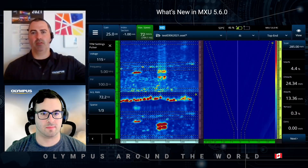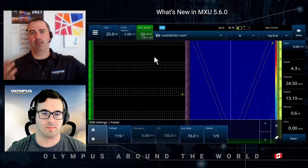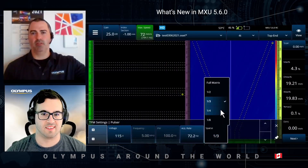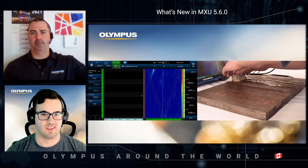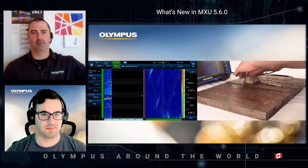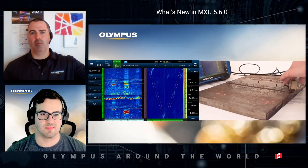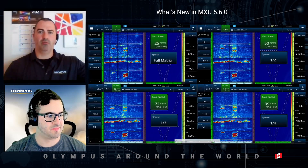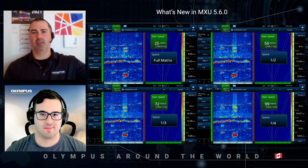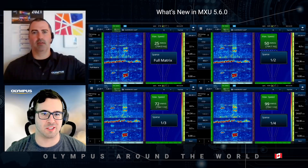This acquisition strategy can make TFM technology more accepted in the market — one of the big drawbacks has been the productivity of this technique. Now with two groups we can reach 100 millimeters per second, which is commonly accepted as a very good manual scanning speed for this kind of situation.